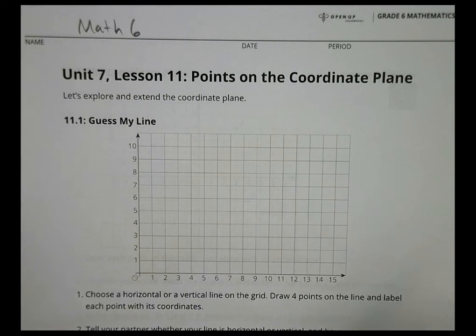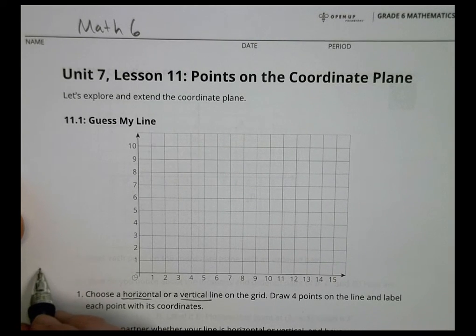Hey there, this is Math 167, Lesson 11: Points on the Coordinate Plane. So first of all, it says choose a horizontal or a vertical line on the grid. Horizontal is going to go this direction, and vertical is going to go this direction. You just get to pick which one you want to use.